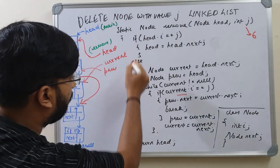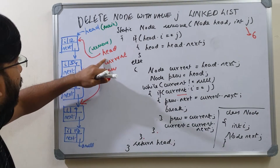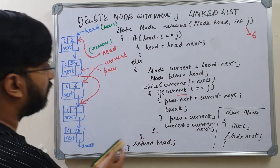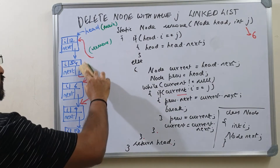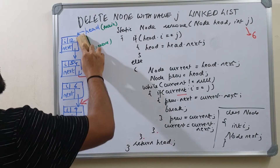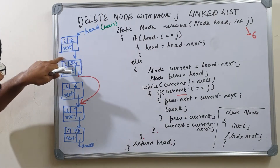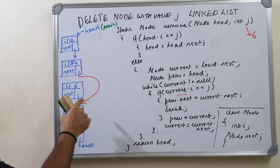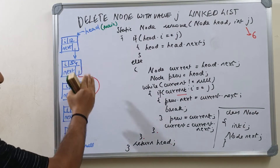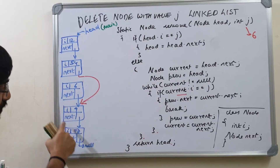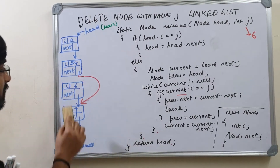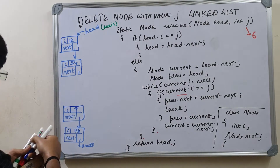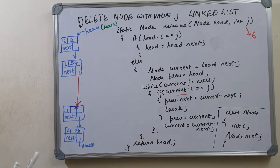We break out of the while loop, exit the else block, and return head. Head in remove is pointing to the same location as head in main, so head in main still points to the start of the list. We lose local variables current and previous. Since no variable directly references the node containing 6 anymore, it is collected by the garbage collector. The node with value 6 has been successfully removed.